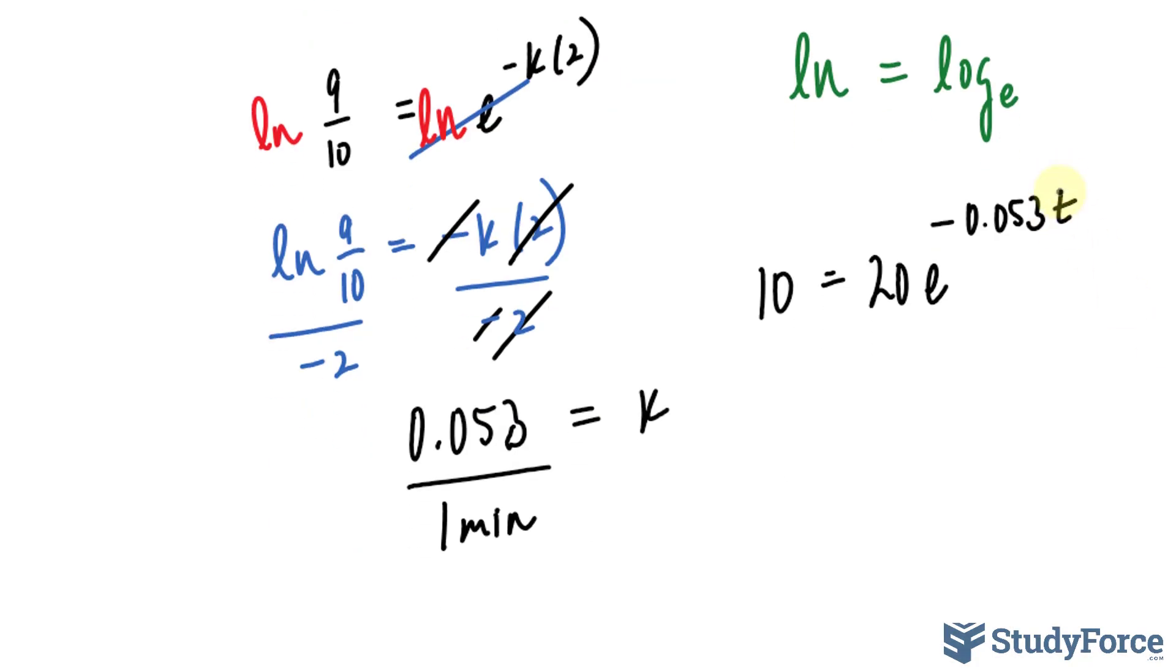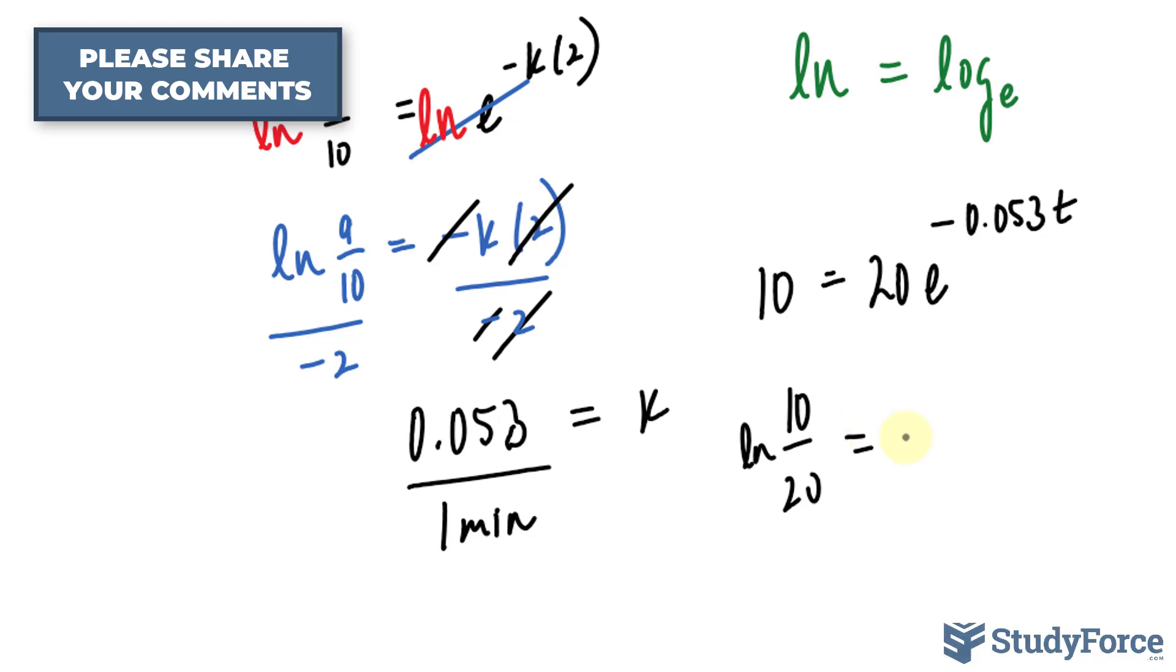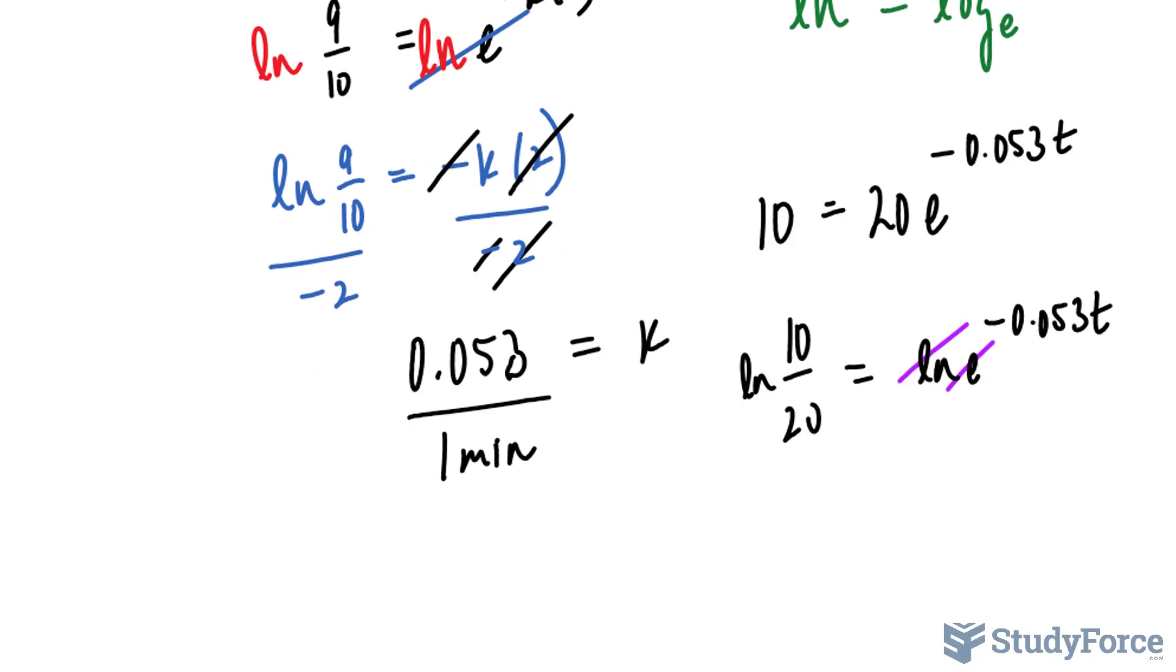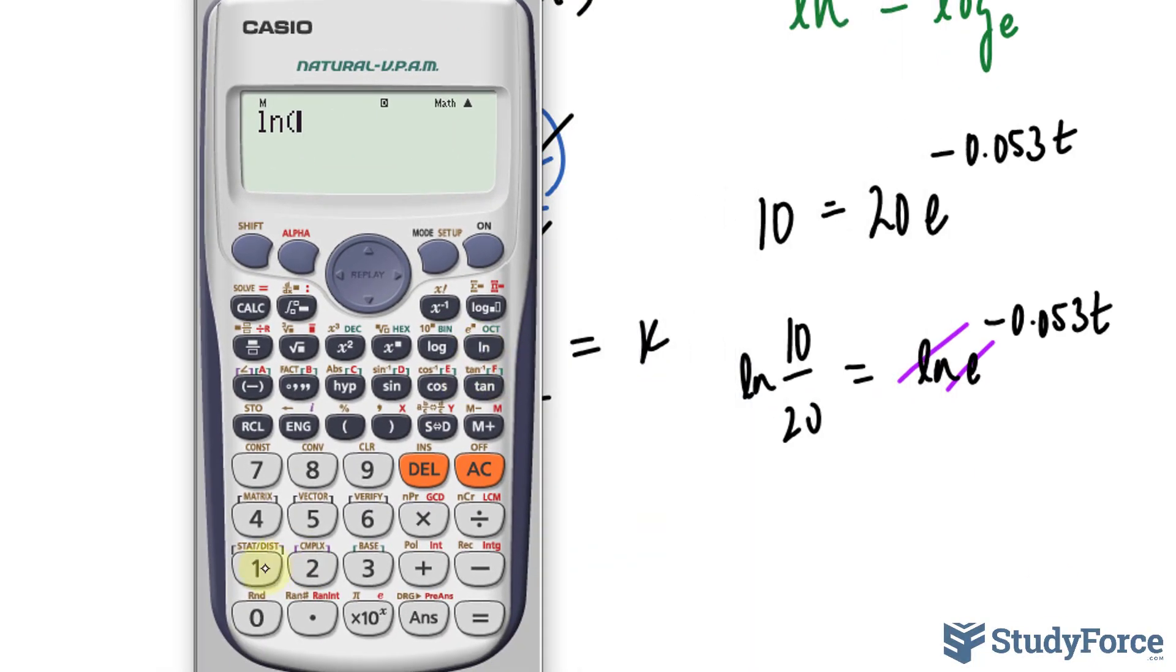So solving for T the exact same way we solved for K in this part, by dividing both sides by 20 and ln both sides, you should end up with a value of T, after all is said and done. Let me show you, ln of 10 over 20 divided by negative 0.053.